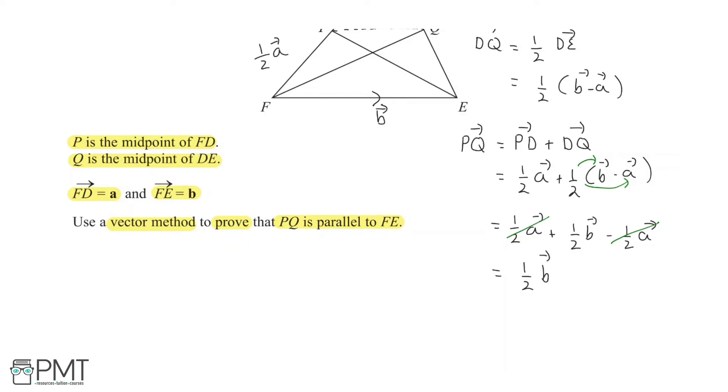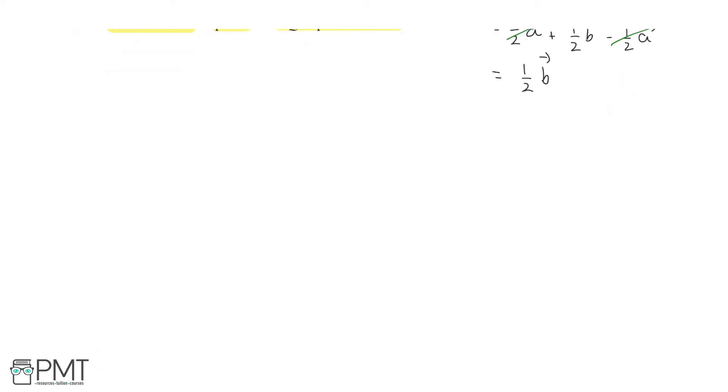Now, we know what PQ is, and we were given FE. So to prove they are parallel, we need to understand the argument that needs to come behind it. So what I'm going to write here, I'm going to actually write a statement: for two vectors to be parallel, they must be scalar multiples of each other.